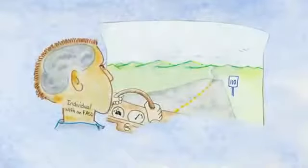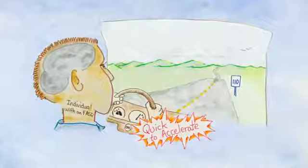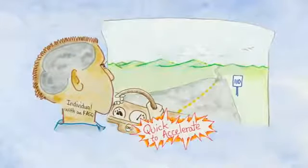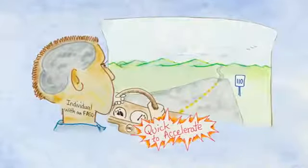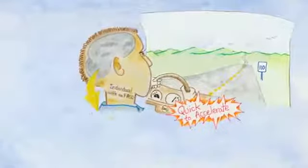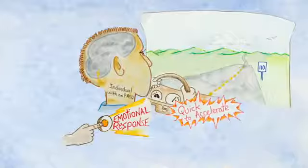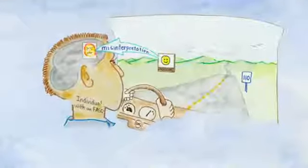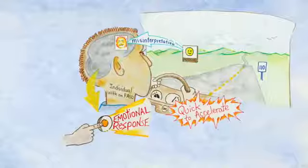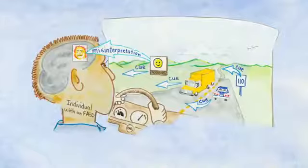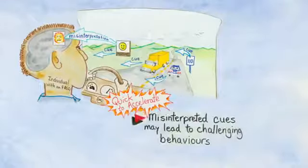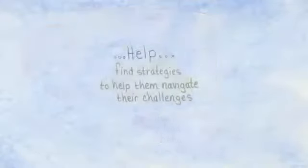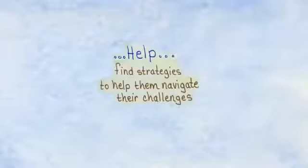On the flip side, individuals with an FASD can also have a hair-trigger accelerator. Think of a race car that can accelerate quickly — it can jolt you abruptly back in your seat with the lightest touch. We can sometimes see a rapid emotional response that may appear to an outside observer as if it came out of nowhere. Recall the misinterpreted smile as a sneer, and add a hair-trigger accelerator, and it is easy to see how problems may occur. Difficulties understanding complex cues, coupled with the potential to accelerate quickly, can lead to challenging behaviors, and supporters can help individuals find strategies to navigate these challenges.